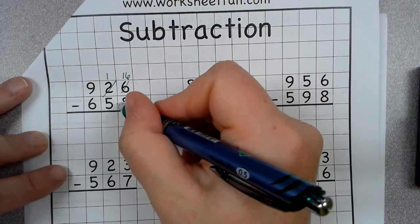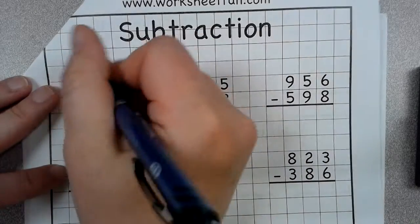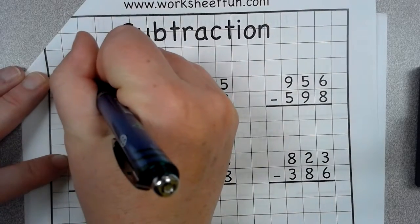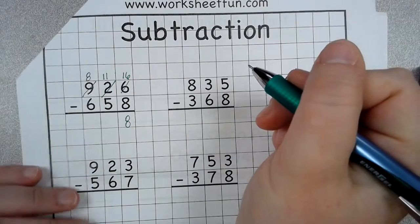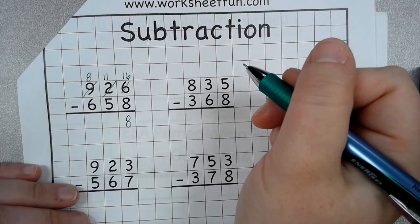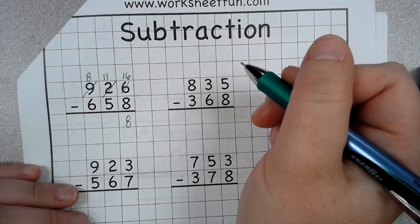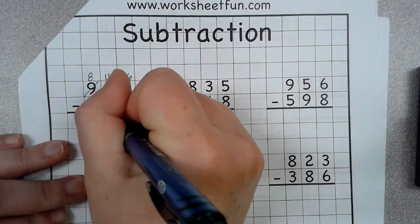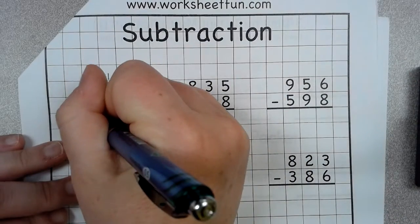I cannot take 5 away from 1, so I have to borrow from the 9. That turns into 8, and this 1 turns into an 11. Okay, 5, I can take 5 from 11, which is 6, and 6 from 8 is 2.